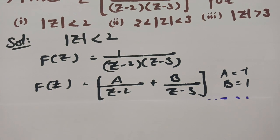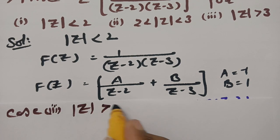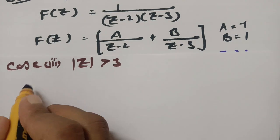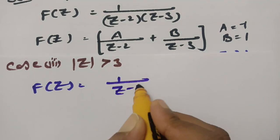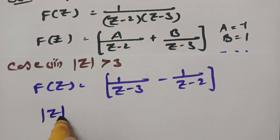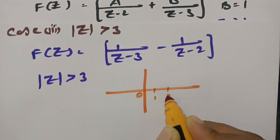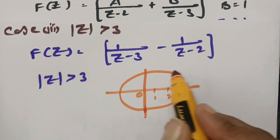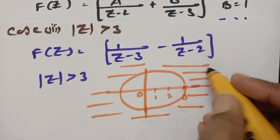For the third case, mod Z greater than 3. Since mod Z > 3 implies mod Z > 2 as well, F(Z) = 1/(Z-3) - 1/(Z-2). The ROC diagram shows: 0, 1, 2, and 3 on the axis. The region of convergence is outside the circle of radius 3, i.e., mod Z greater than 3.